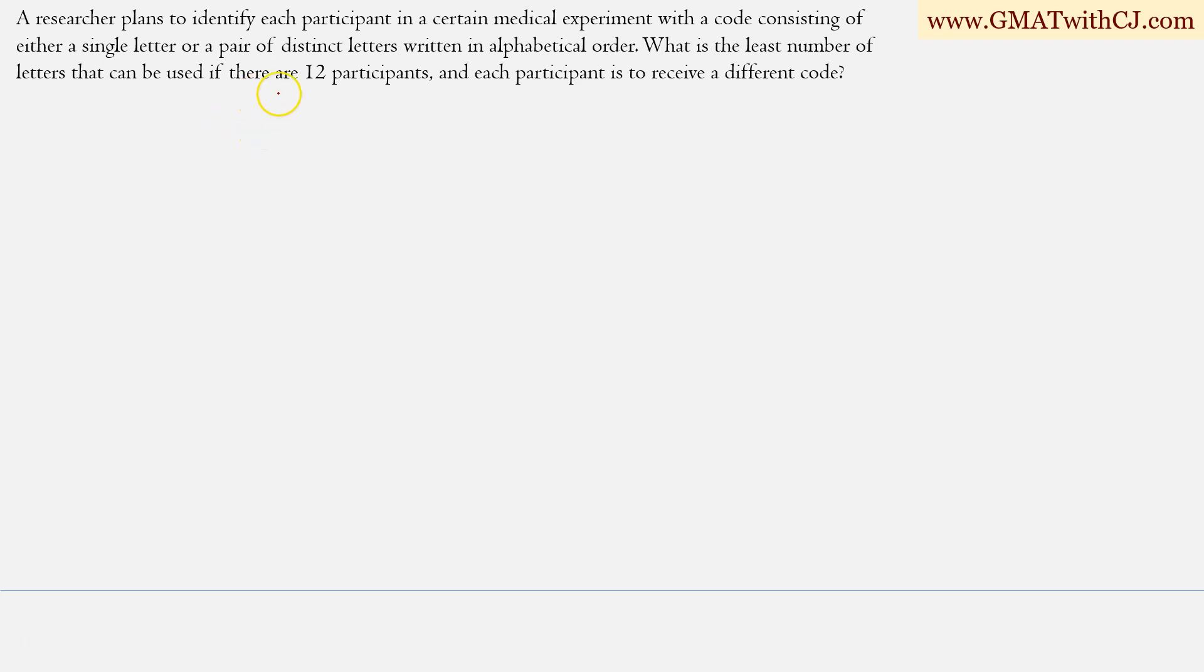A researcher plans to identify each participant in a certain medical experiment with a code. So we are trying to identify each participant with a code. You want to assign a code to every participant. The code consists of either a single letter or a pair of distinct letters.